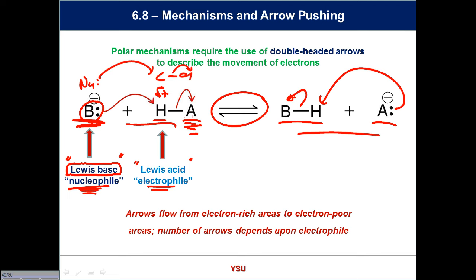We're going to use double-headed arrows because we're dealing with two electrons each time — both the bonds we're making and the bonds we're forming involve two electrons. Later we'll do single-headed arrows, but right now it's all about two.